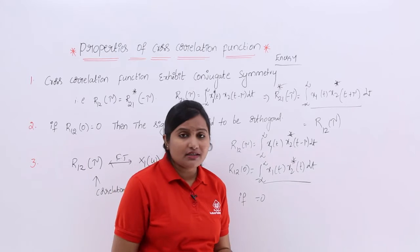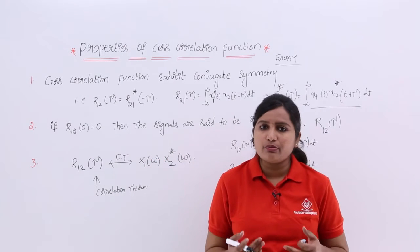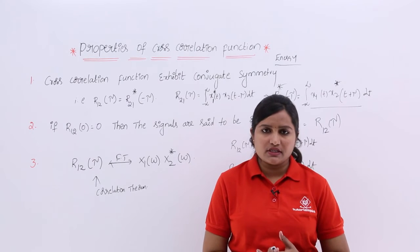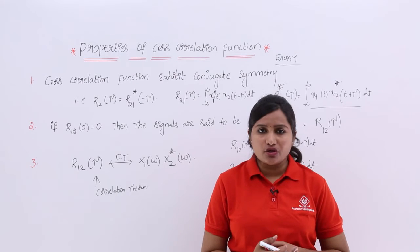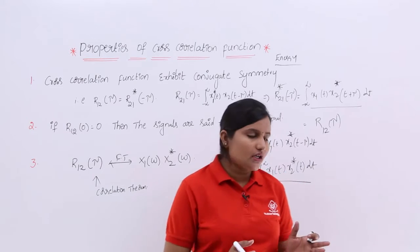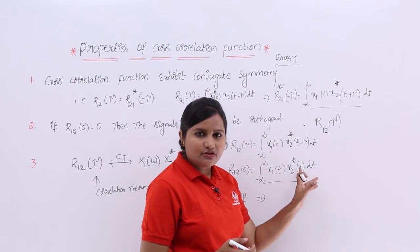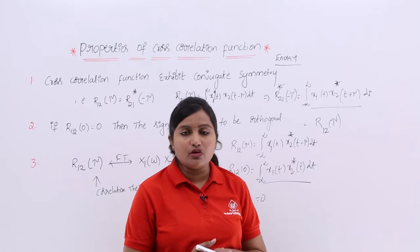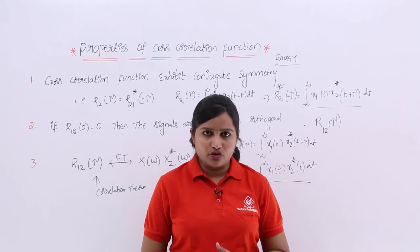In very initial classes of signals and systems we discussed this orthogonality condition. Whenever two signals are said to be orthogonal, the integral minus infinity to infinity of the first signal into the second signal dt is equivalent to 0. If this integration value is equivalent to 0, then we can say the two signals are orthogonal.